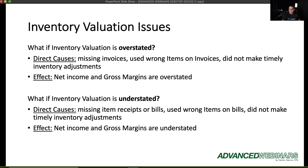If your inventory is understated, QuickBooks is showing less inventory than you actually have. This is typically caused by not entering bills or item receipts — people will have a purchase order but forget to enter the bill, sending the cost to a cost of goods account without ever bringing the inventory in. Using wrong items or non-inventory items in a bill can also understate inventory.